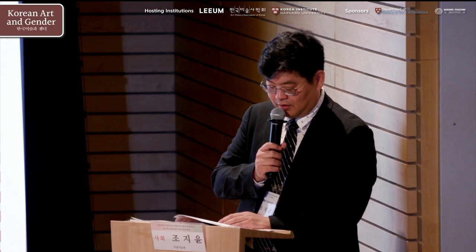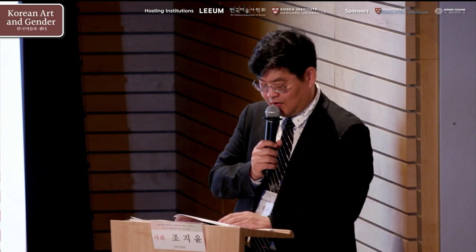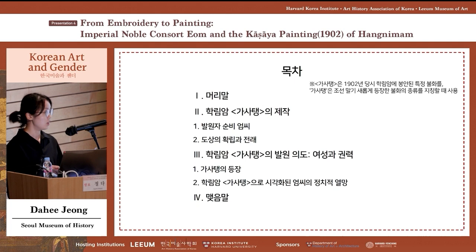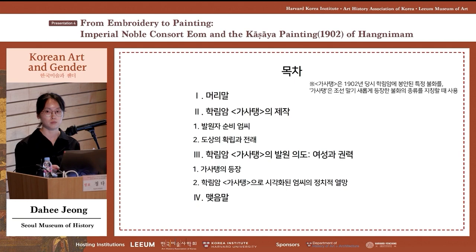The presentation is titled 'From Embroidery to Painting: Imperial Noble Consort Eum and the Ga Sa Taeng Painting at Hangnimam.' The presentation will analyze two Ga Sa Taengs. First is the Ga Sa Taeng at Hangnimam, and sometimes the same term is used to refer to the genre.